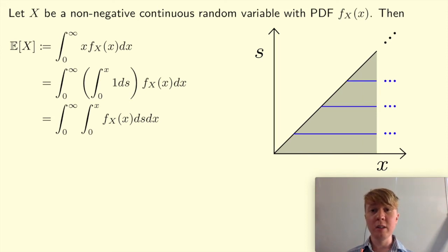Then we change the order of integration for each fixed value of S. You can see from the picture here, x has to be greater than or equal to S. So x is varying from S up to infinity. Of course, S is going from 0 to infinity, just as its overall range of values that it takes. So our outer integral, we're now integrating with respect to S between 0 and infinity, and our inner integral goes from S up to infinity for each fixed value of S.